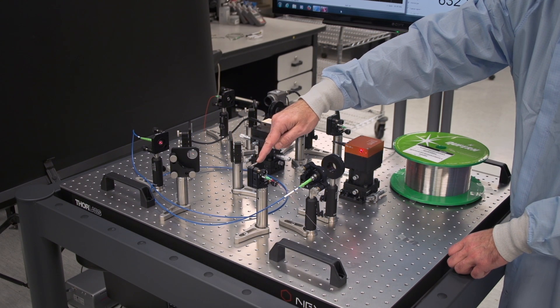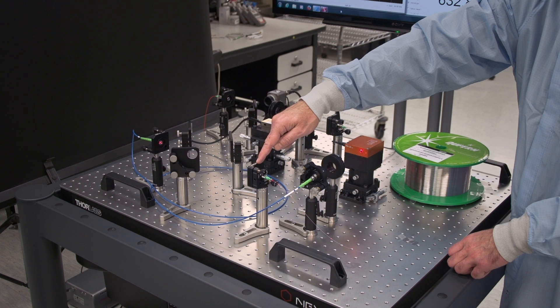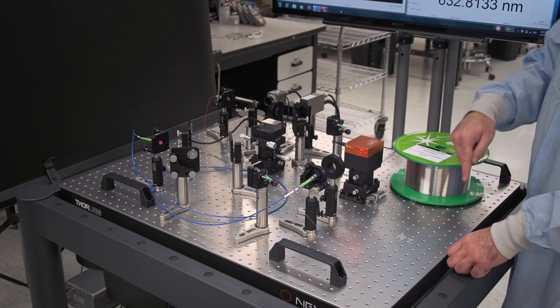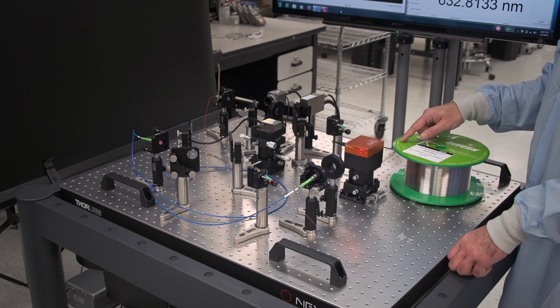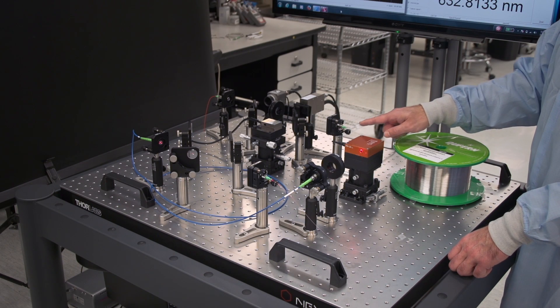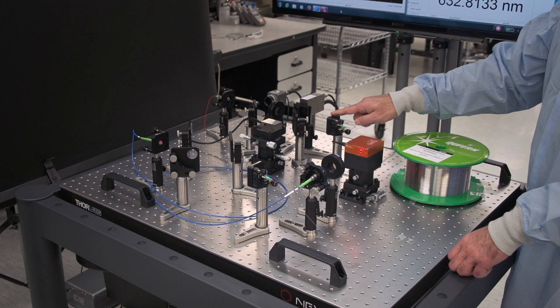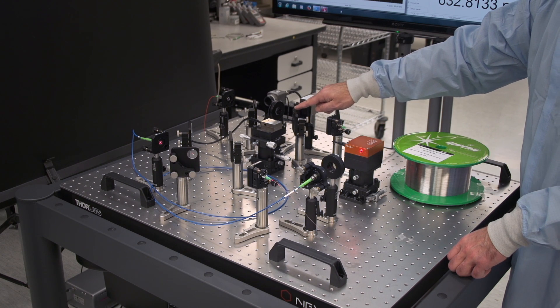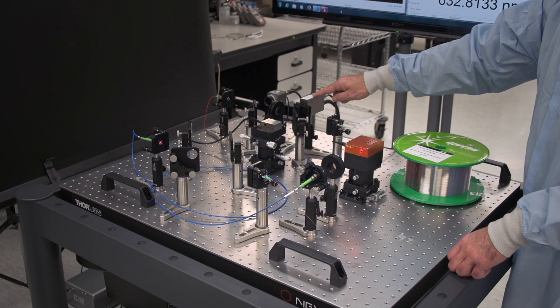And the other half goes through and is coupled into a very long spool of fiber. This is a kilometer of polarization-maintaining fiber. And then, after passing through that spool, the output is collimated and then recombined here on this detector.